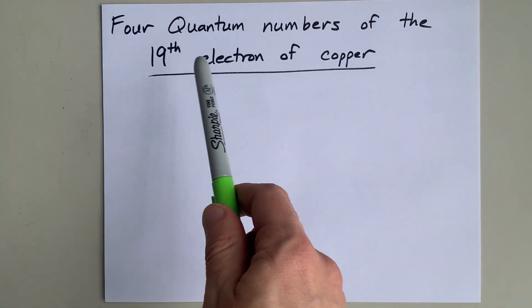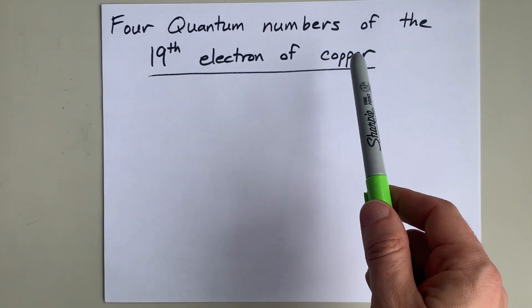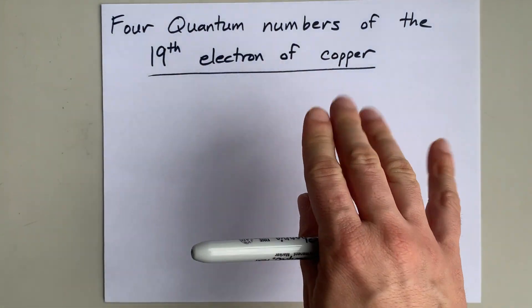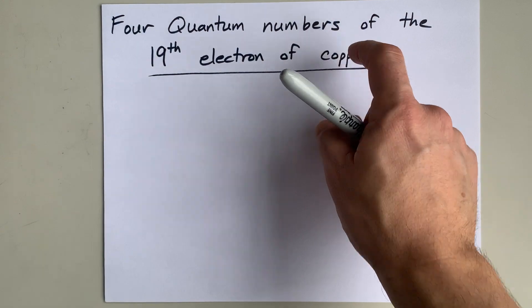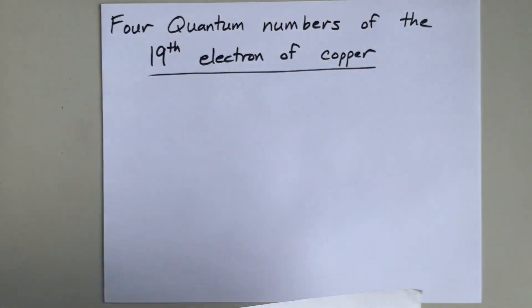We're going to figure out the four quantum numbers for the 19th electron in copper. And I already want your spidey senses to be tingling for copper because the electron configuration of copper is different from what you expect.